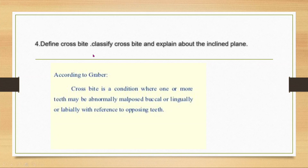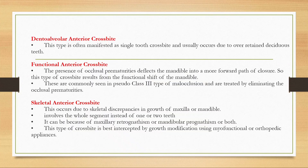The next topic is crossbite and the inclined plane — Catalan's plane. According to Graber, a crossbite is a condition where one or more teeth may be abnormally maloccluded, buccally or lingually, with reference to the opposing teeth. Types of crossbite include dental/alveolar, which is often a single tooth crossbite usually occurring due to over-retained deciduous teeth, and functional crossbite, where occlusal prematurities deflect the mandible into a more forward path of closure.